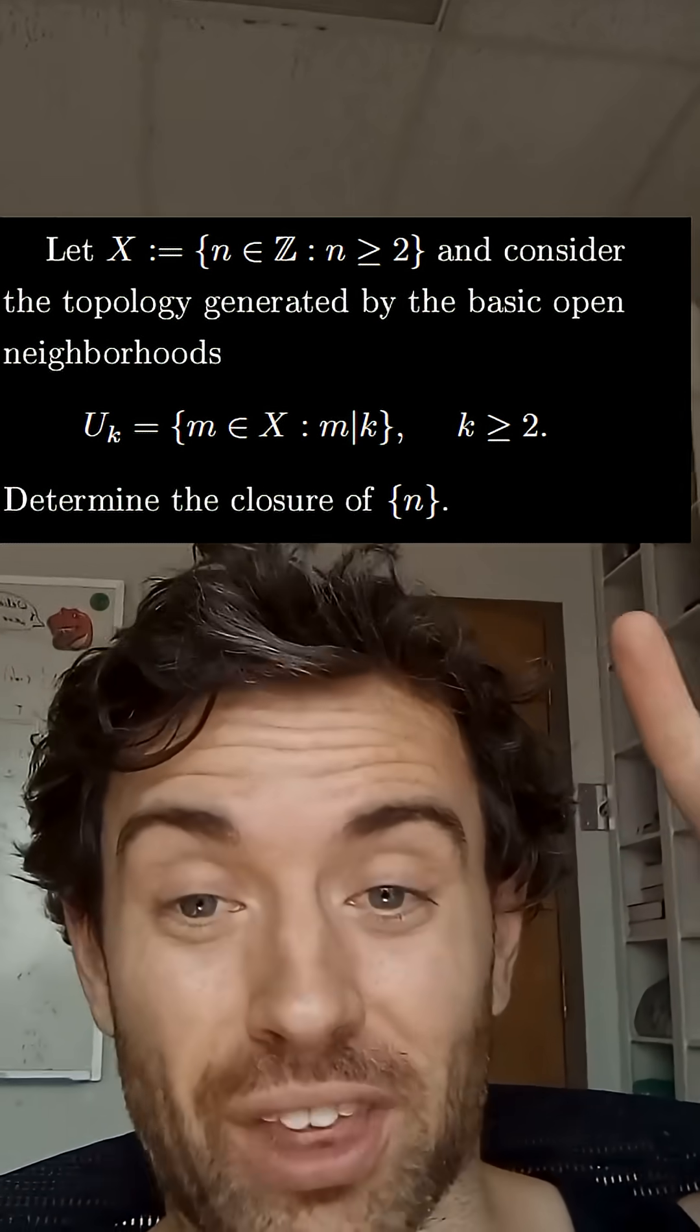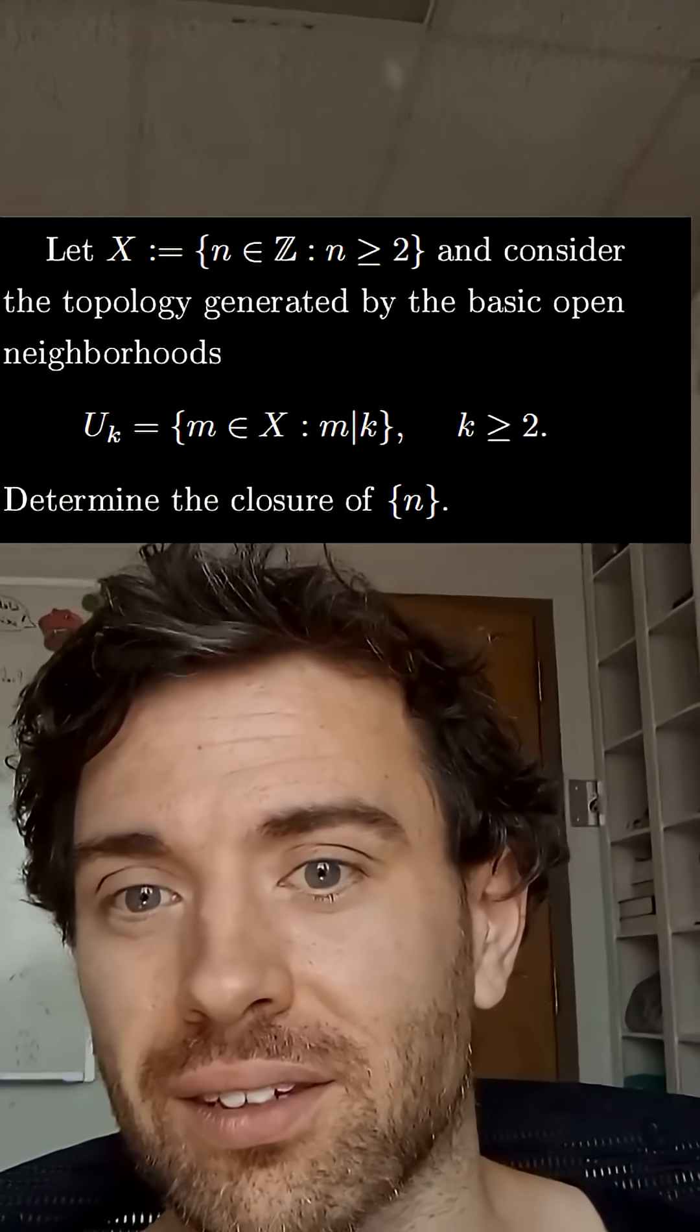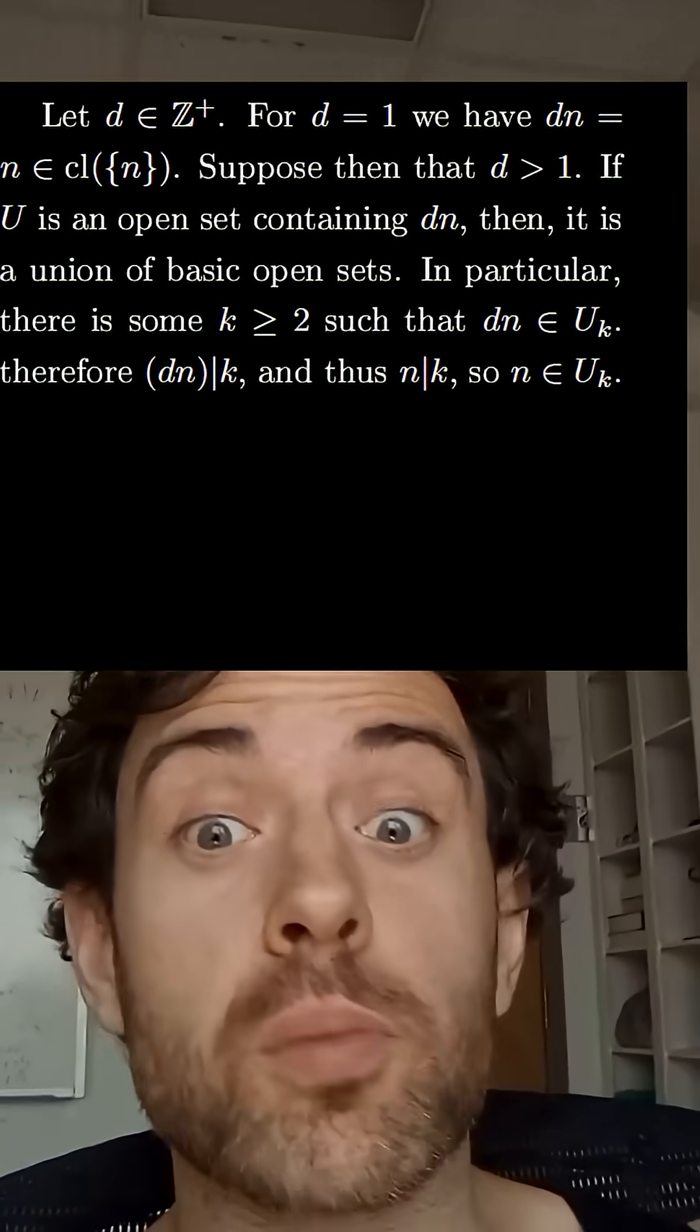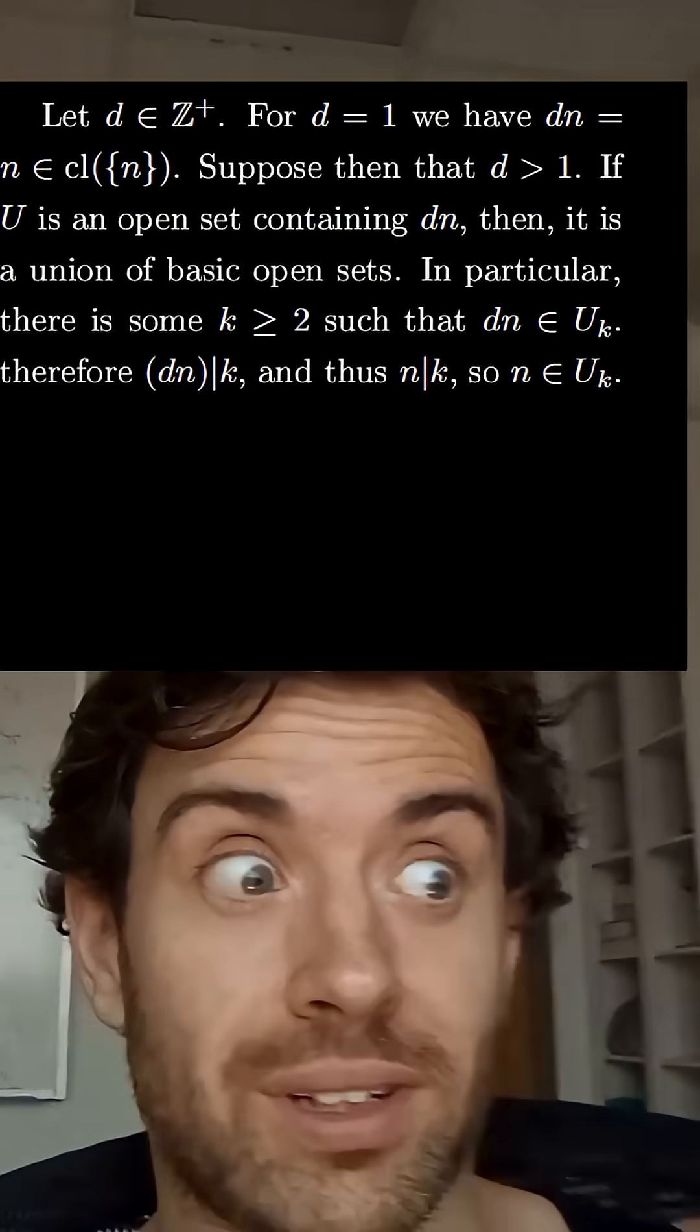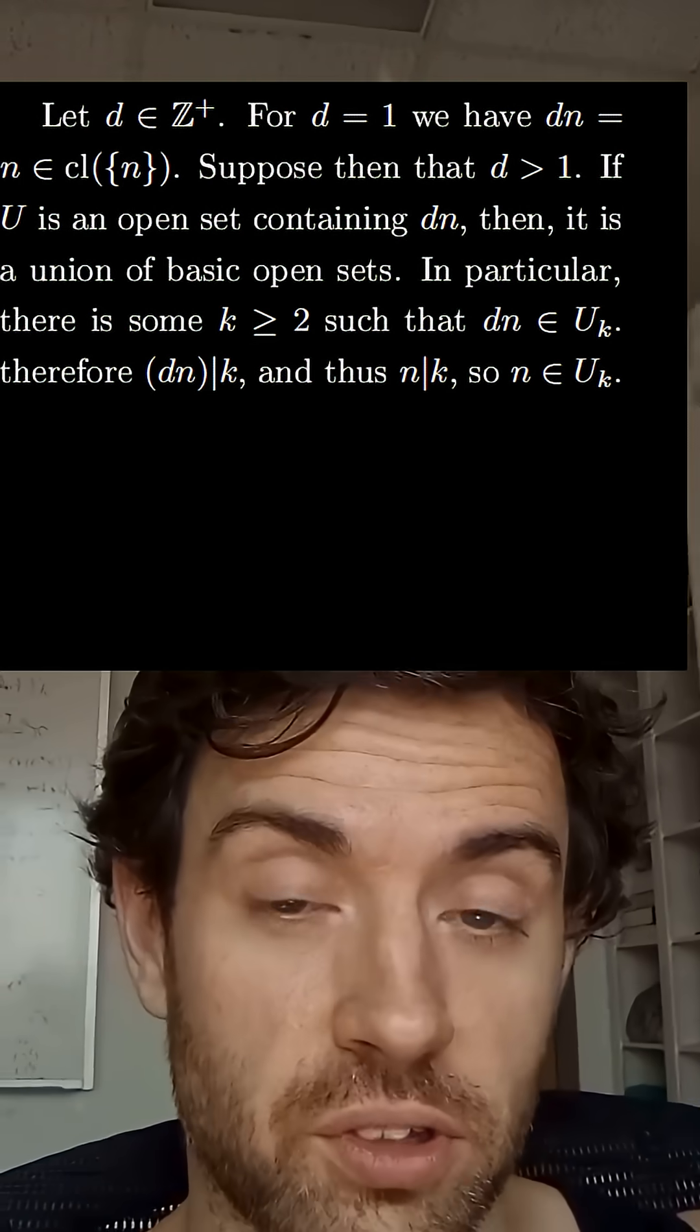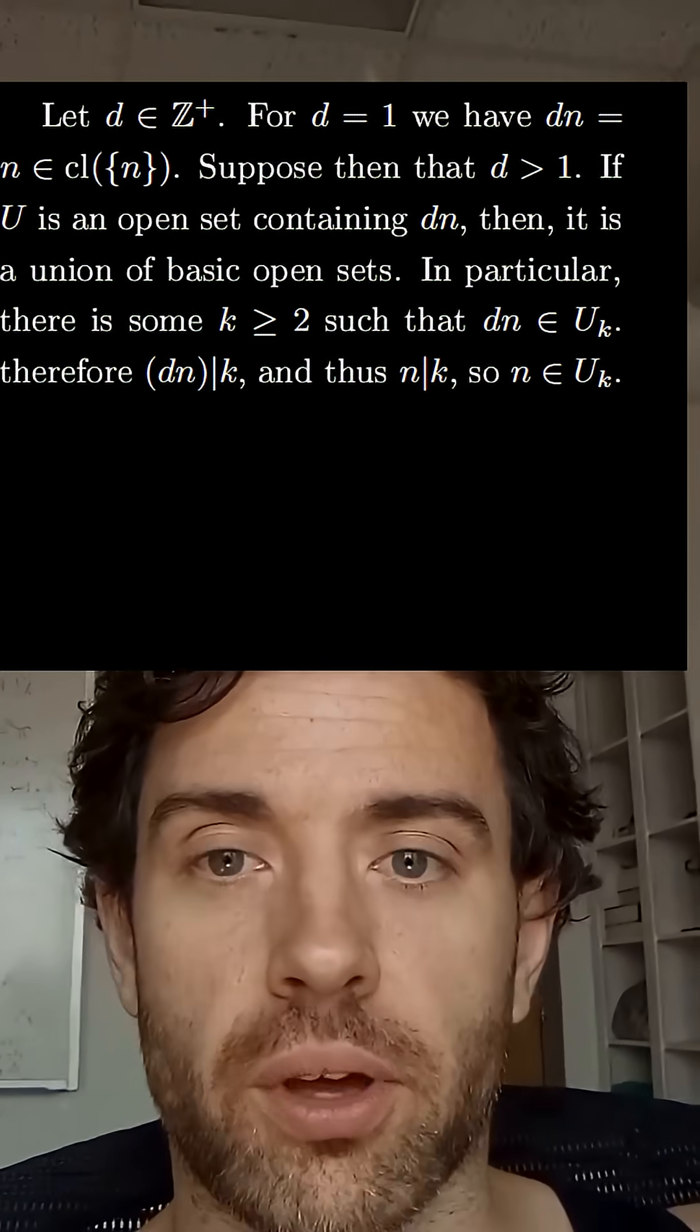So my claim is that this is just all the multiples of n. To see this, suppose that we have some positive integer d and we're going to grab an arbitrary open set which contains dn. In particular, that open set is a union of basic open sets and so it must be that dn belongs to some